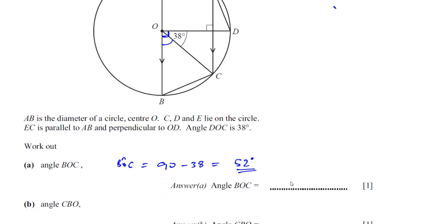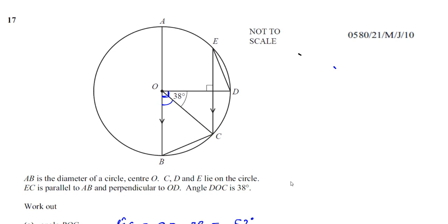Part B tells us to work out angle CBO. Angle CBO is the angle over here. Now, one thing you should always know when you've got angles and circles is that the radii are all the same in the same circle. So the line from O to B and from O to C and from O to D and from O to A are all the same length. So that makes this triangle here an isosceles triangle. These two angles must be the same.